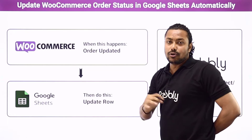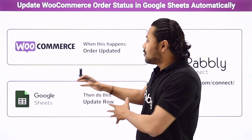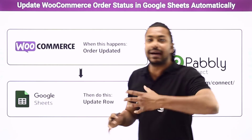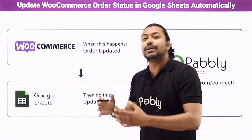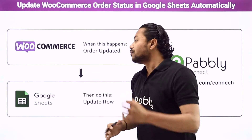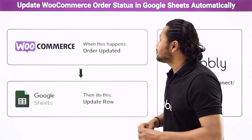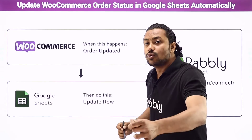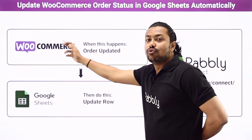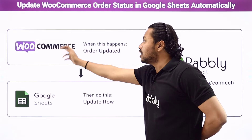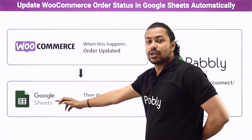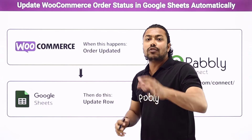Suppose you have a sheet with WooCommerce orders backup. Whenever you are updating an order in WooCommerce, the order will automatically update in Google Sheets too.